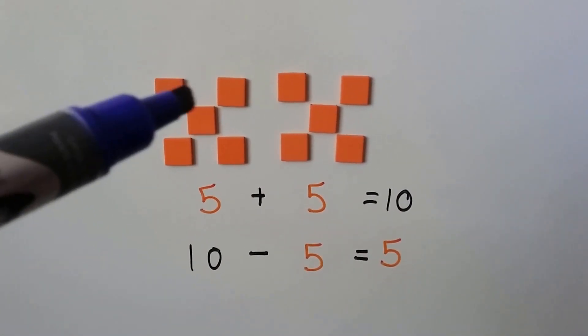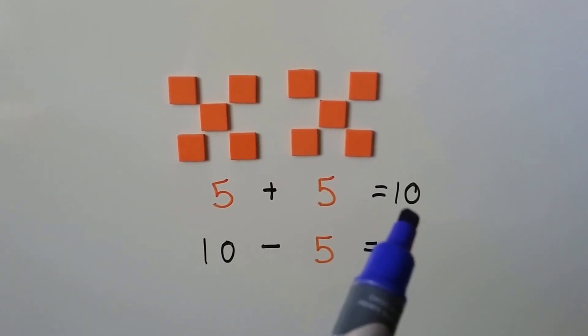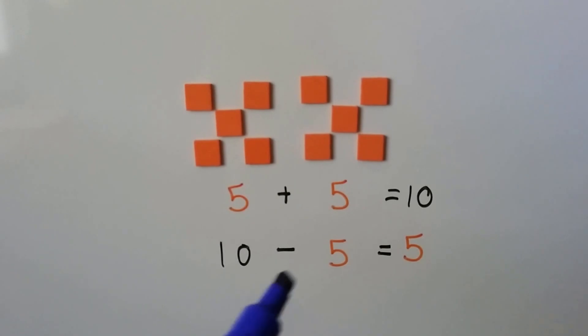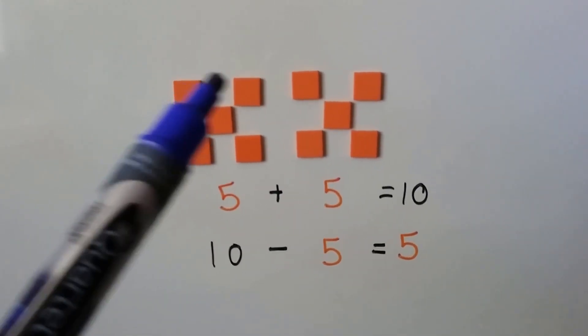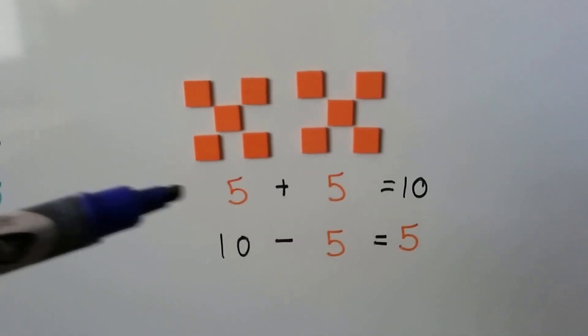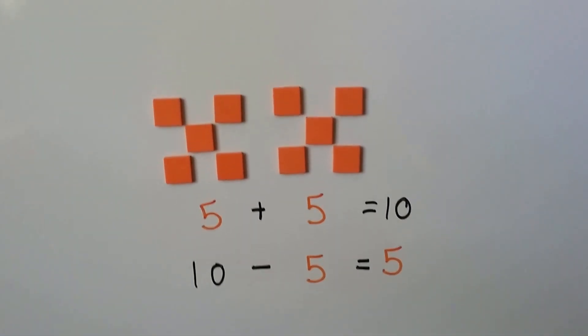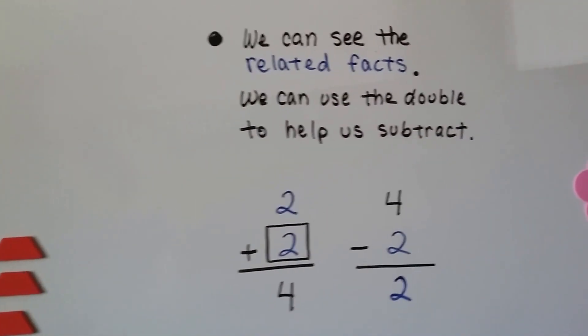5 orange squares plus 5 orange squares is 10 orange squares. 10 orange squares minus 5, if we take these away we'll just have 5 left. We can see the doubles. We can see the related facts, and we can use the double to help us subtract.